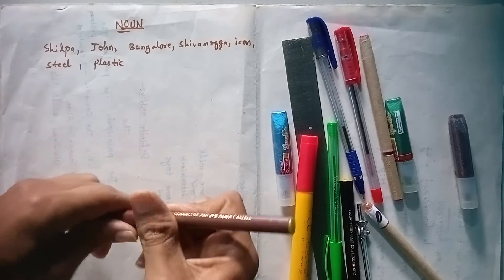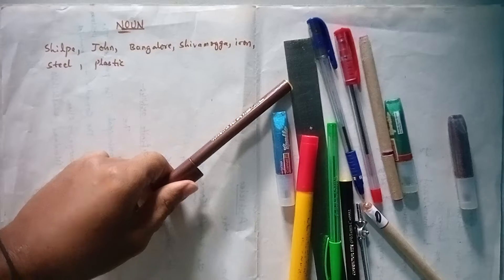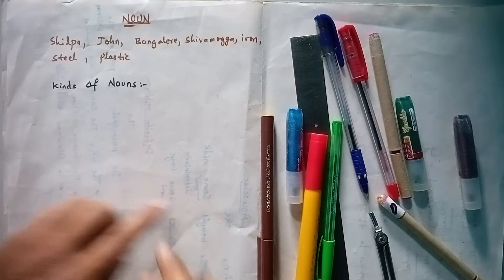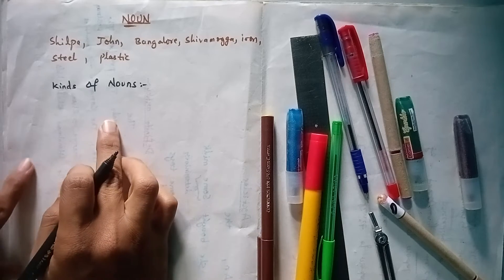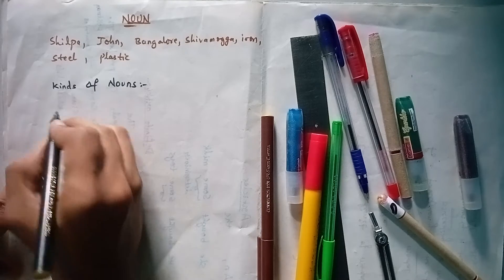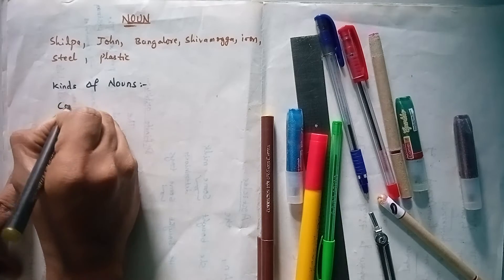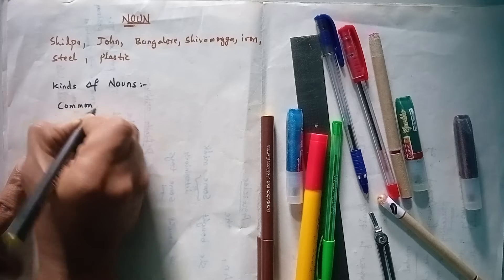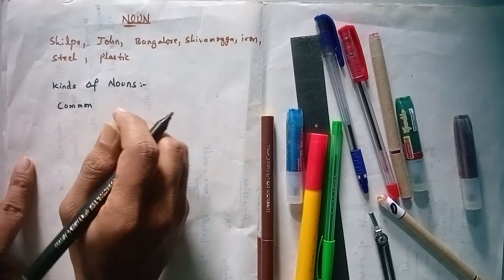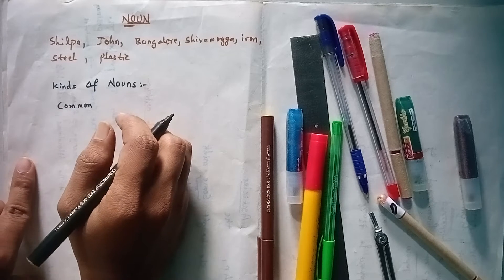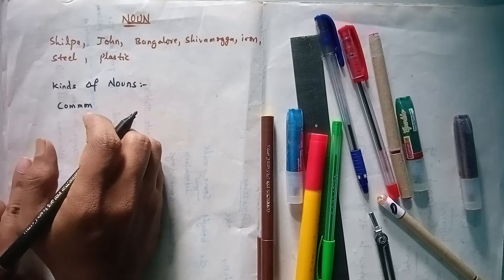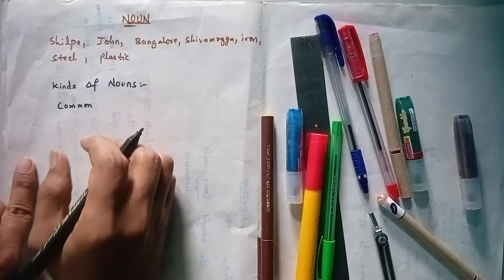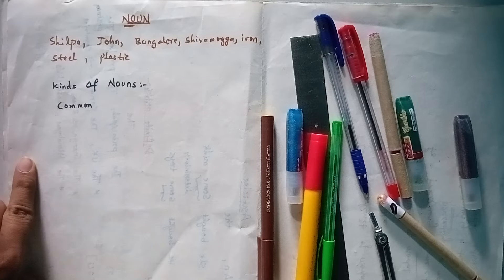There are five kinds of nouns. They are: common noun, proper noun, collective noun, material noun, and abstract noun.